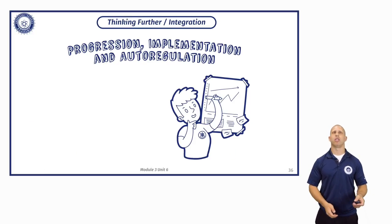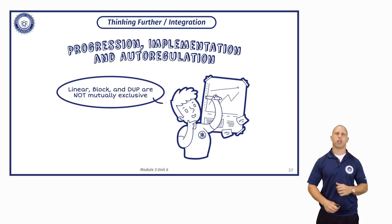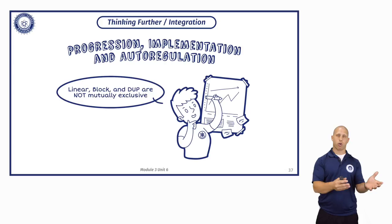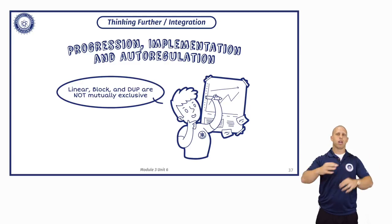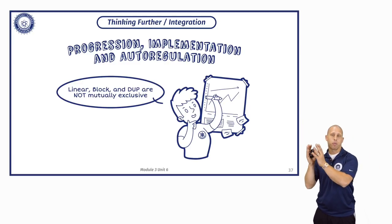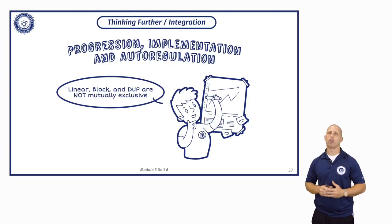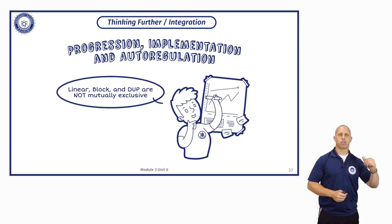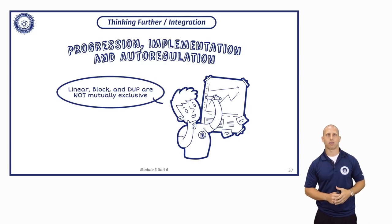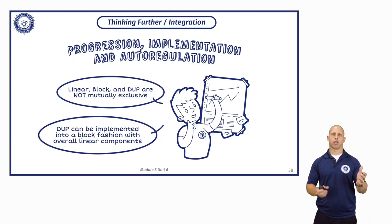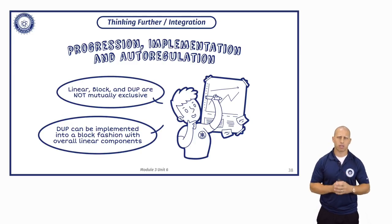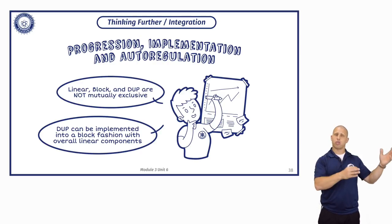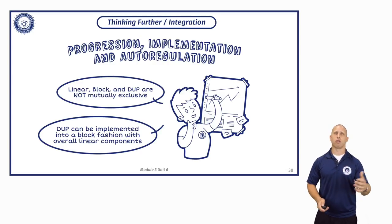So: progression, implementation, and auto-regulation. Now that we understand the difference between periodization and programming, we can talk even more about integration. We mentioned block periodization — where volume crosses intensity is a preparatory phase with volume blocks, and when intensity crosses volume, that's a peaking phase with intensity blocks. In terms of auto-regulation, we've mentioned choosing the daily training session based upon your energy levels or how you feel.